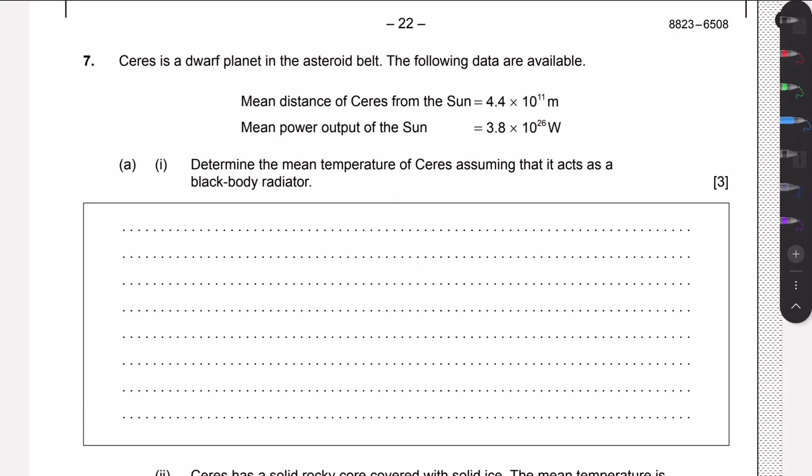In this question we're given a dwarf planet in an asteroid belt and we're given the distance of this planet from the sun and the mean power output of the sun. We need to determine the mean temperature of Ceres, the dwarf planet, assuming that it acts as a blackbody radiator. This means that all objects have this property called emissivity, and this is one for a blackbody radiator, which means that all the radiation that is incident upon the surface of Ceres is absorbed by the surface and is used to warm up the planet itself.